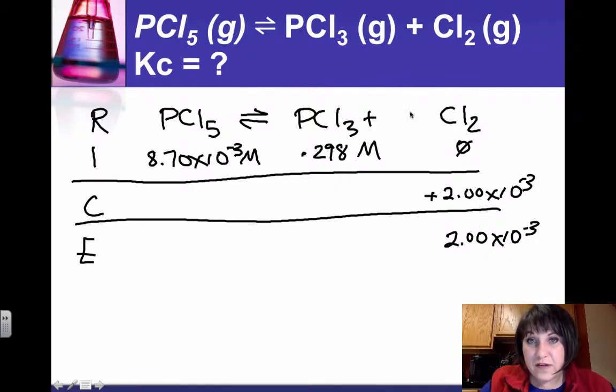Since it's a 1 to 1 mole ratio with phosphorous trichloride, that means we also gained 2.00 times 10 to the minus 3 moles of PCl3. So I add 0.298 molar to 2 times 10 to the minus 3, and so minus 3 is, that gives me 0.300 molar,